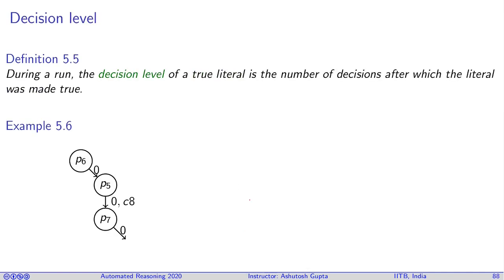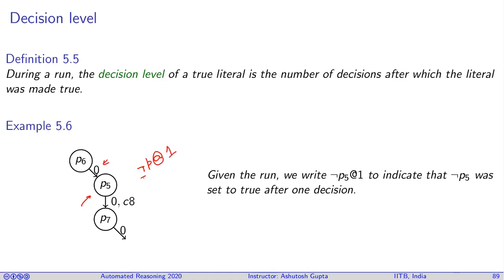During a run we assign a decision level on every literal. For example, in this run we can say that p5 was assigned false, so not p5 assigned to true, at decision level one because after decision one this was assigned. Similarly, not p7 becomes true after two decisions are made, and in fact p7 itself is the decision. So once you make a decision, that decision counts and after which that variable is assigned. Similarly we can say not p6 at level one.